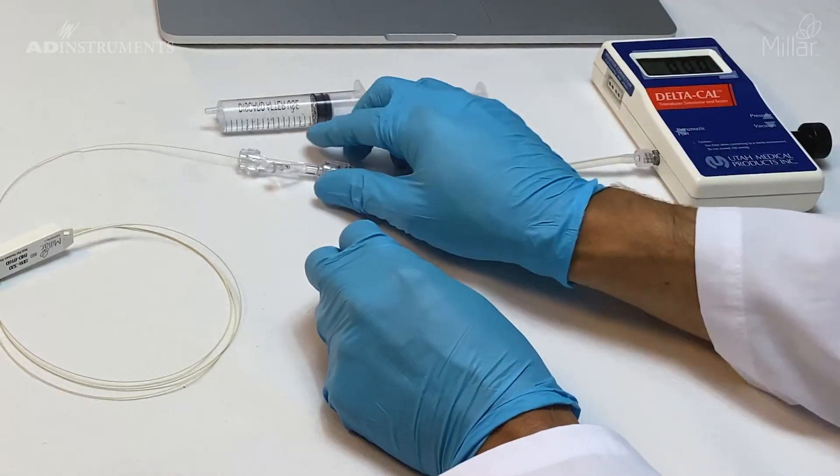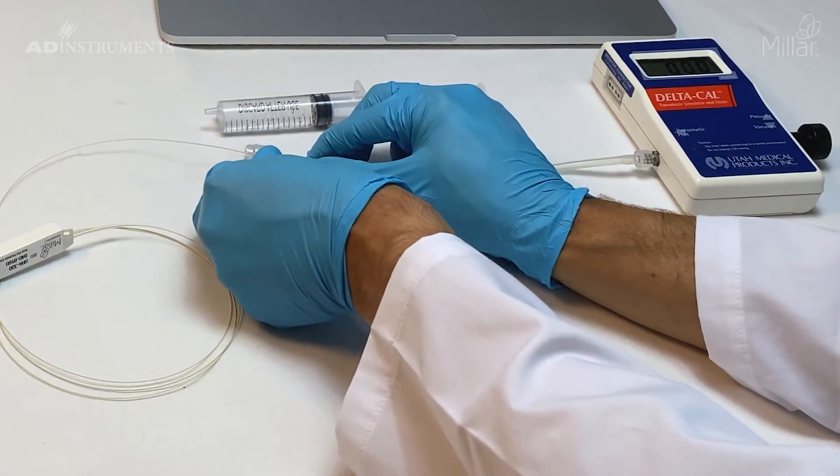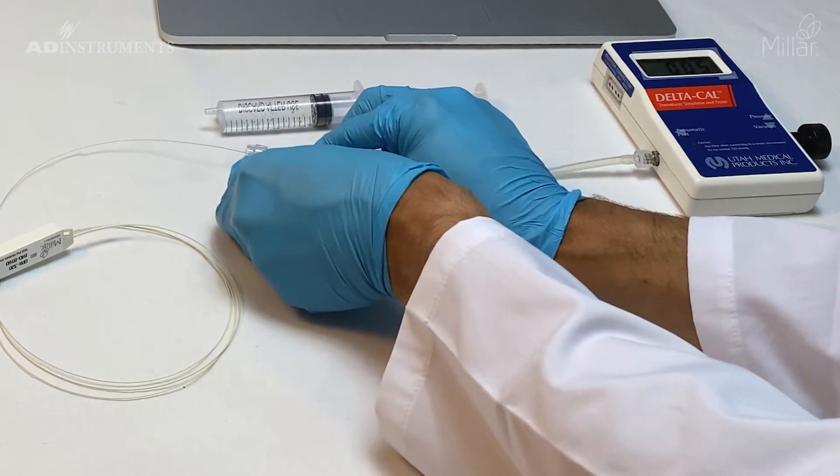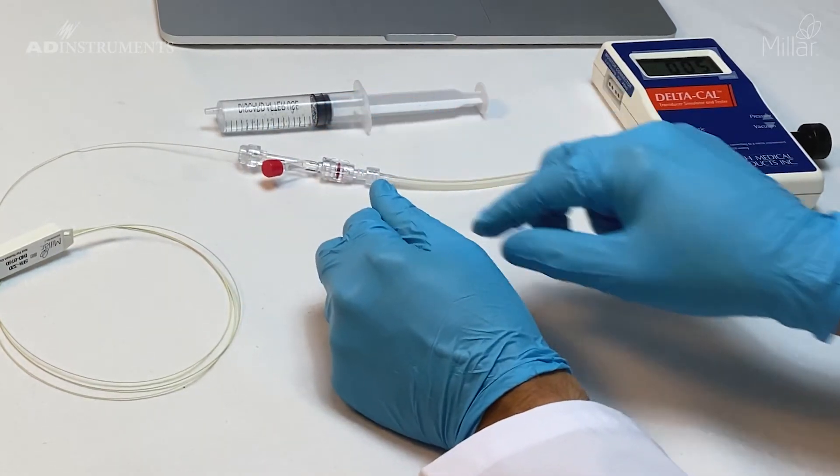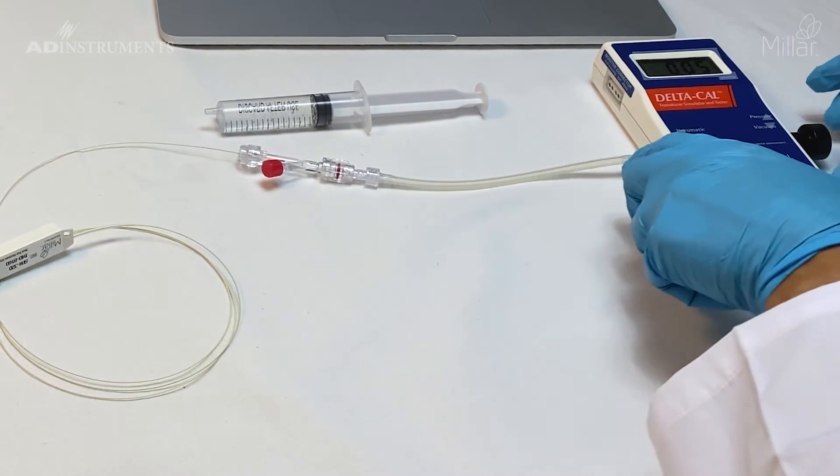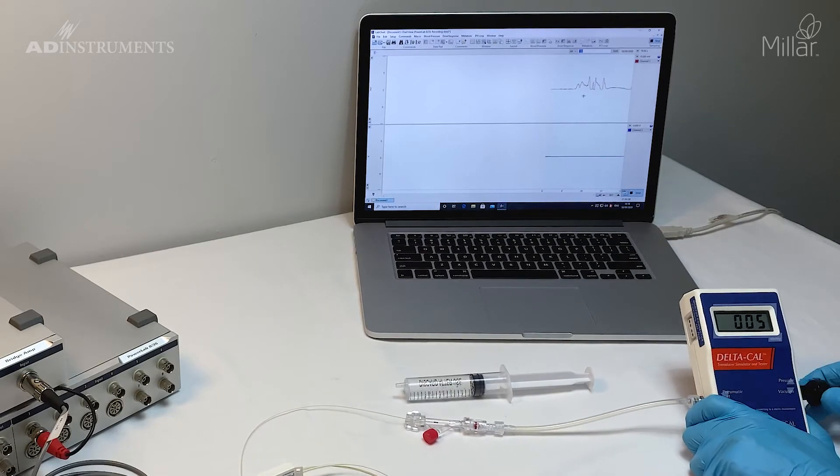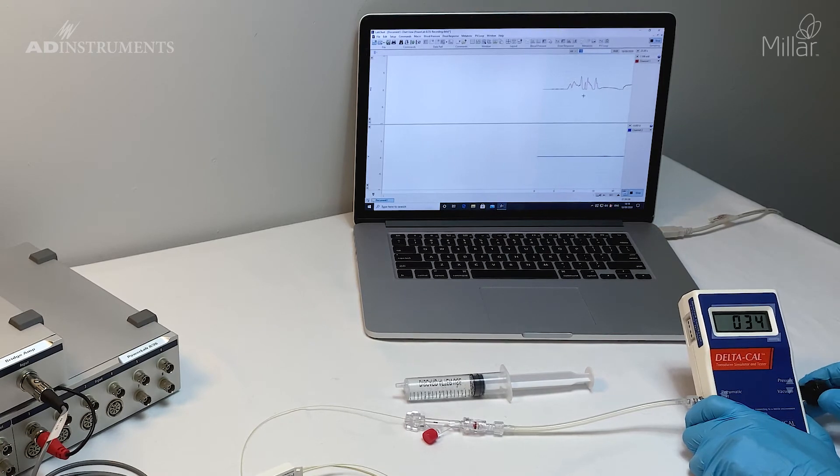Now I'll calibrate for 50 and 150 millimeters of mercury. I'll put the red cap back on to seal the system, then increase the DeltaCal to 50 millimeters of mercury and add a comment for 50.